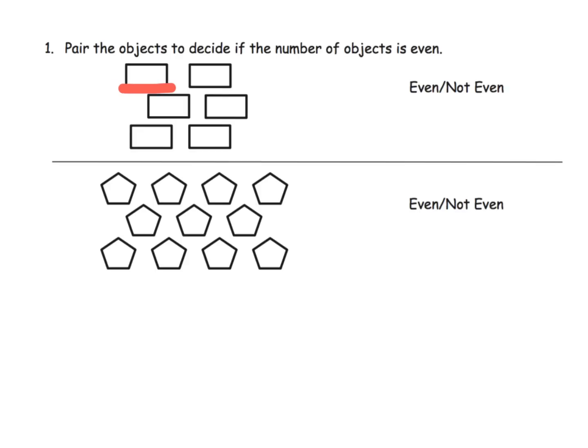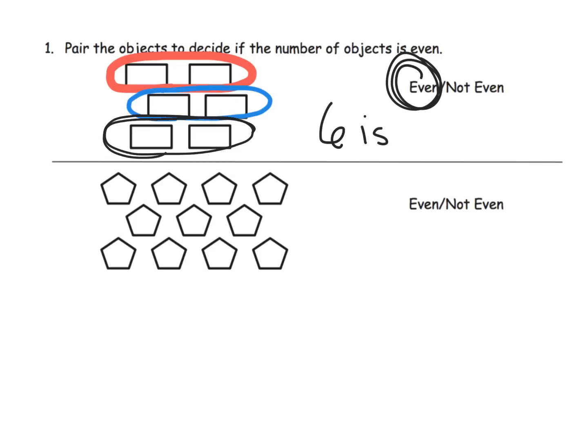We're going to pair up the objects. This rectangle has a partner across the street, this rectangle has a partner across the street, and lastly this rectangle has a partner across the street. Since every rectangle has a partner, that means this guy is even. We can also think of six as three plus three, so that's how we know six is even.